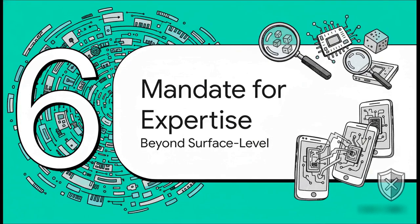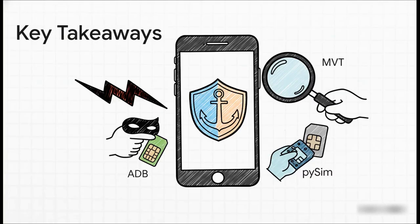Let's tie all of this together — the mandate for real expertise, and why surface-level knowledge is totally insufficient now. Everything we've looked at — the attack vectors, the forensic frameworks, the low-level programming tools — points to a clear and urgent trend in mobile security. The days of just running a simple antivirus scan and calling it done are long over. The battlefield has fundamentally shifted: mobile devices are now our core identity anchors, attackers are targeting low-level interfaces like ADB and identity modules like the SIM, effective defense requires specialized forensic frameworks like MVT, and proactive security research demands deep, programmable control with tools like PySIM. Mastery of both offensive and defensive low-level techniques isn't just a nice-to-have — it's a professional mandate.